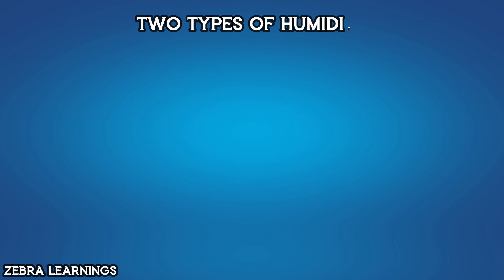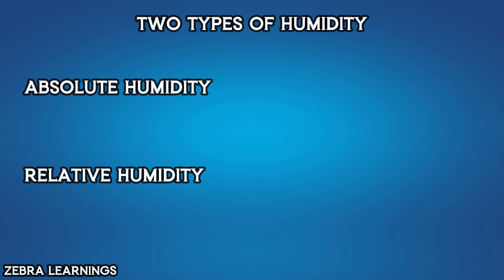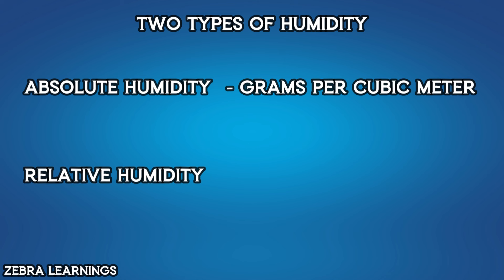There are two types of humidity. One is absolute humidity, and the other is relative humidity. Absolute humidity is measured in grams per cubic meter, and relative humidity is measured as a percentage.